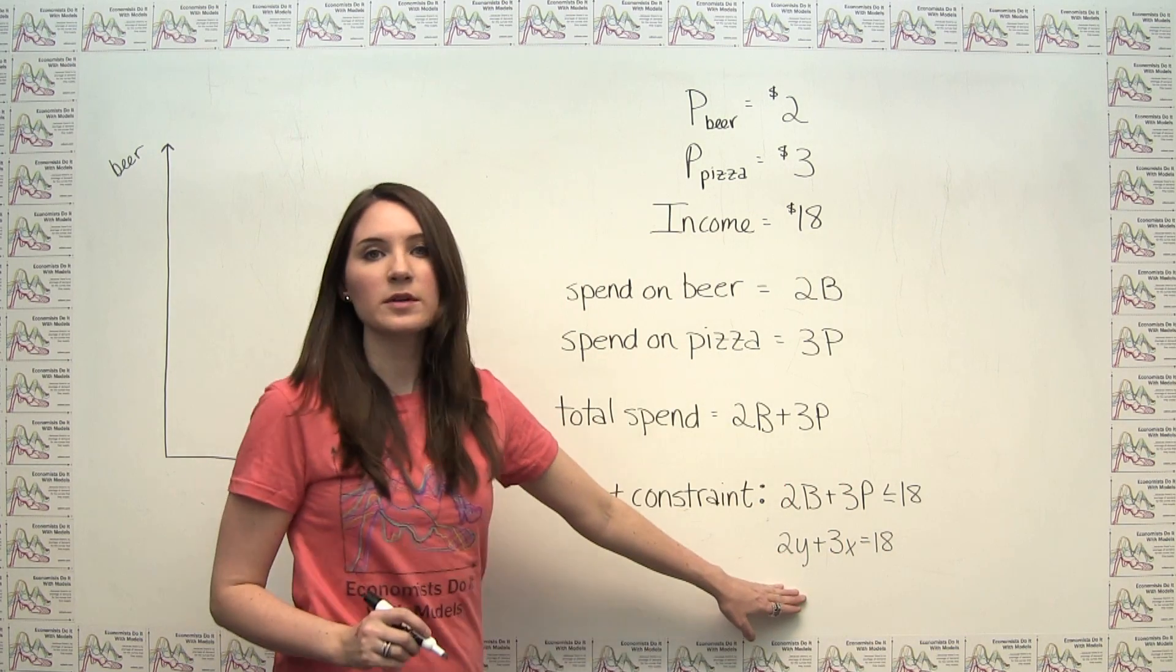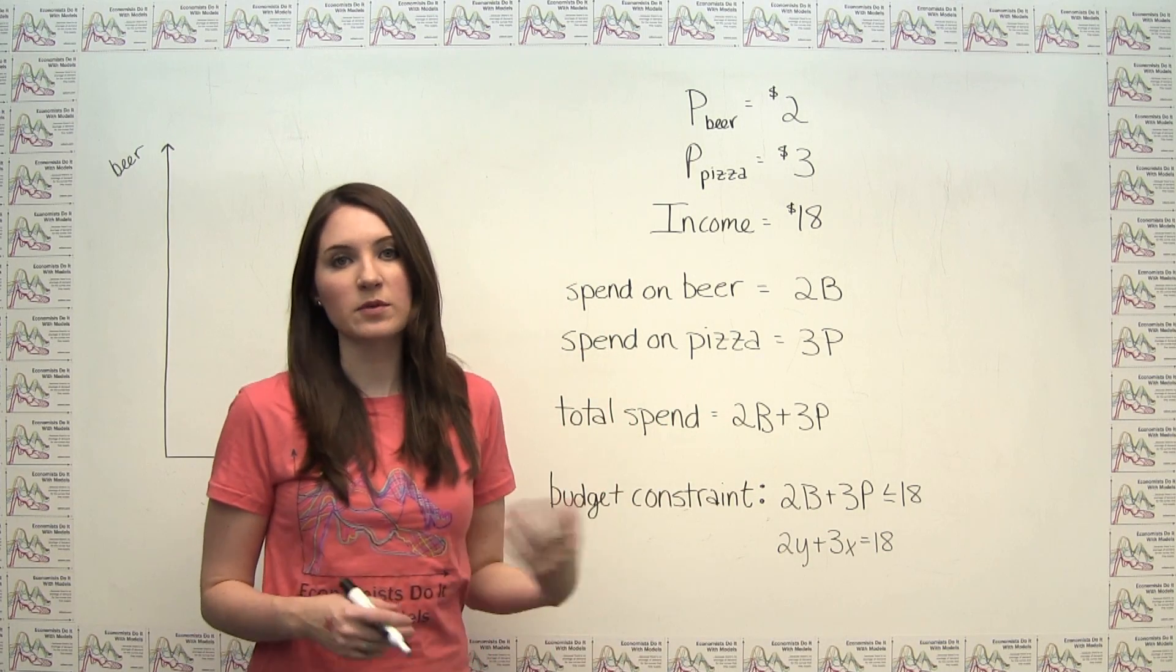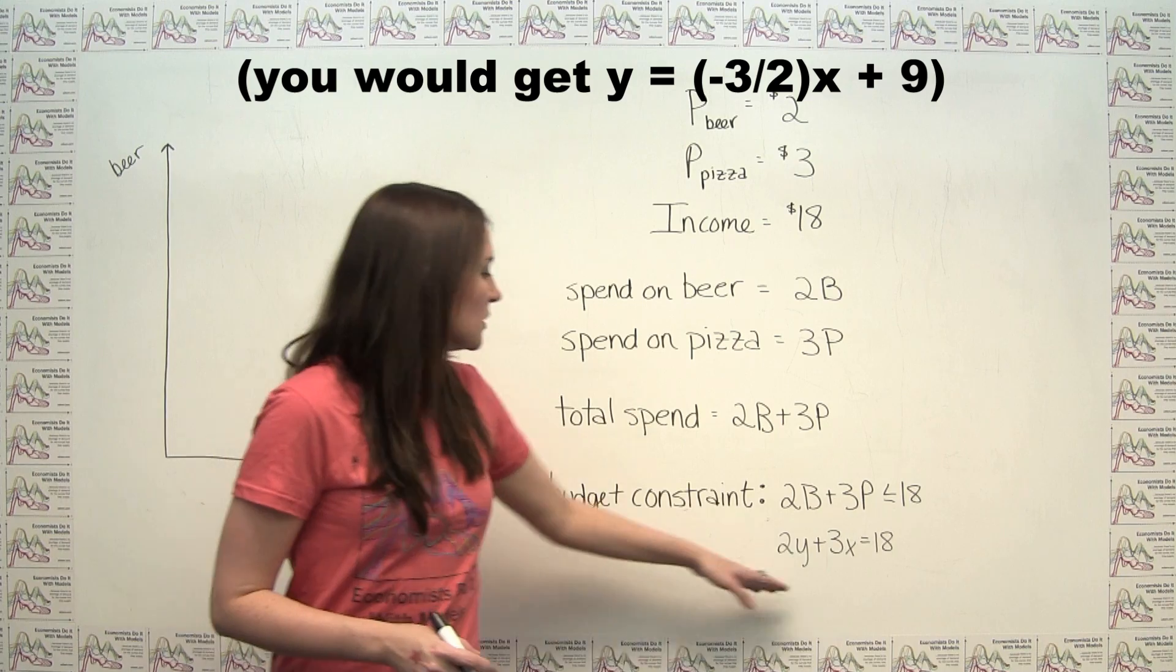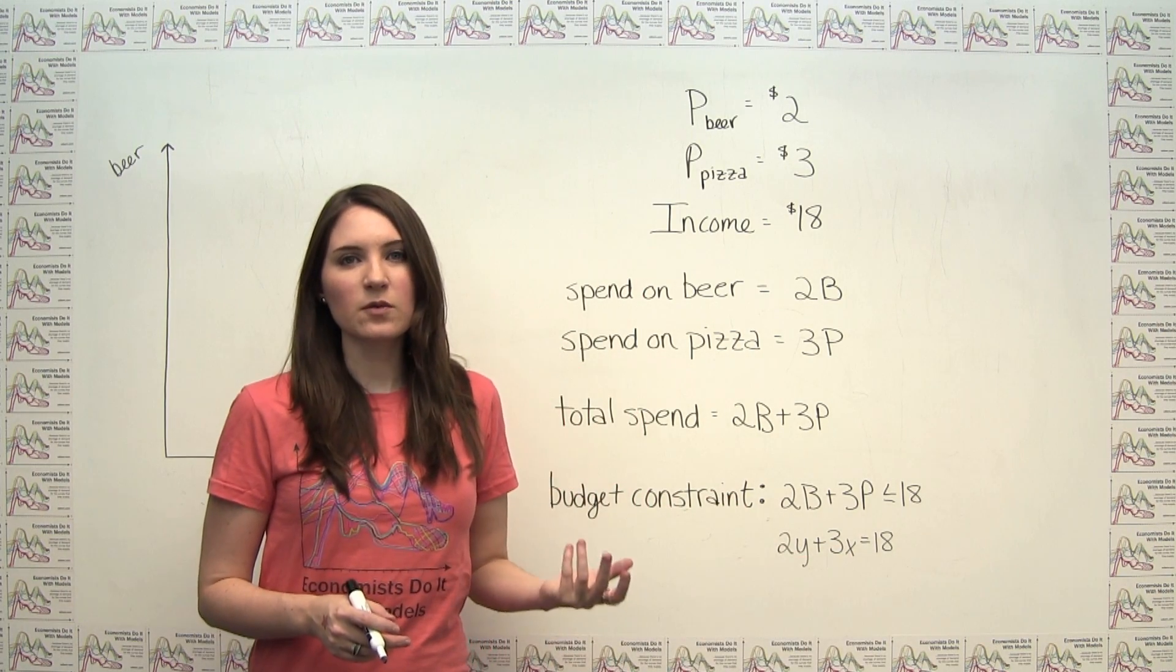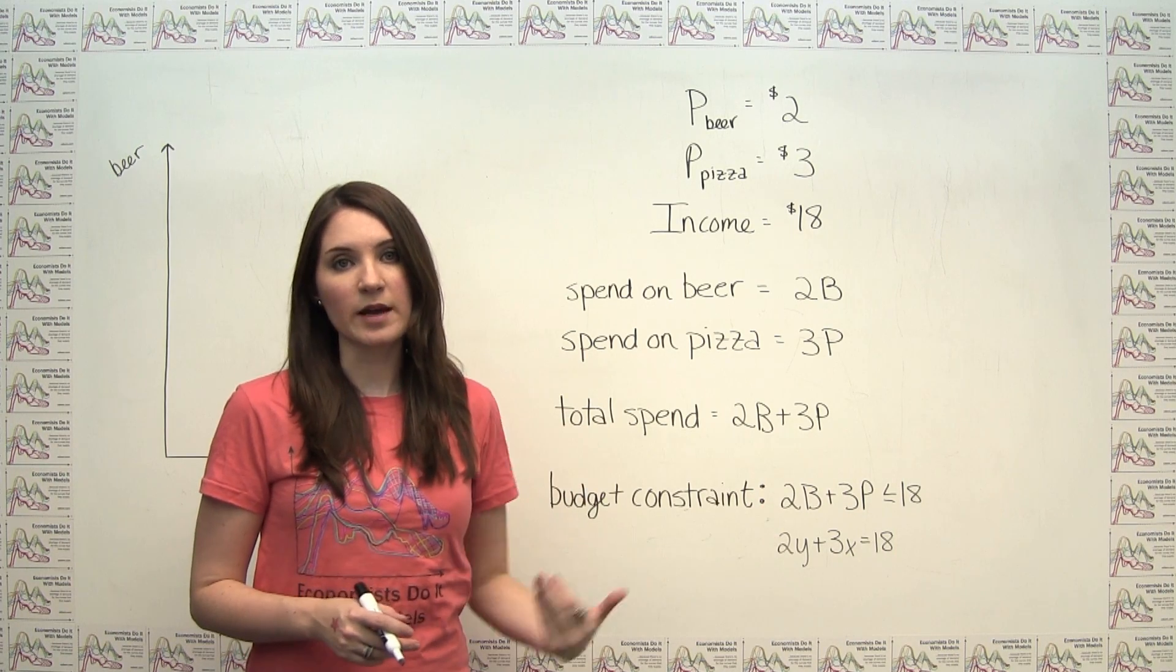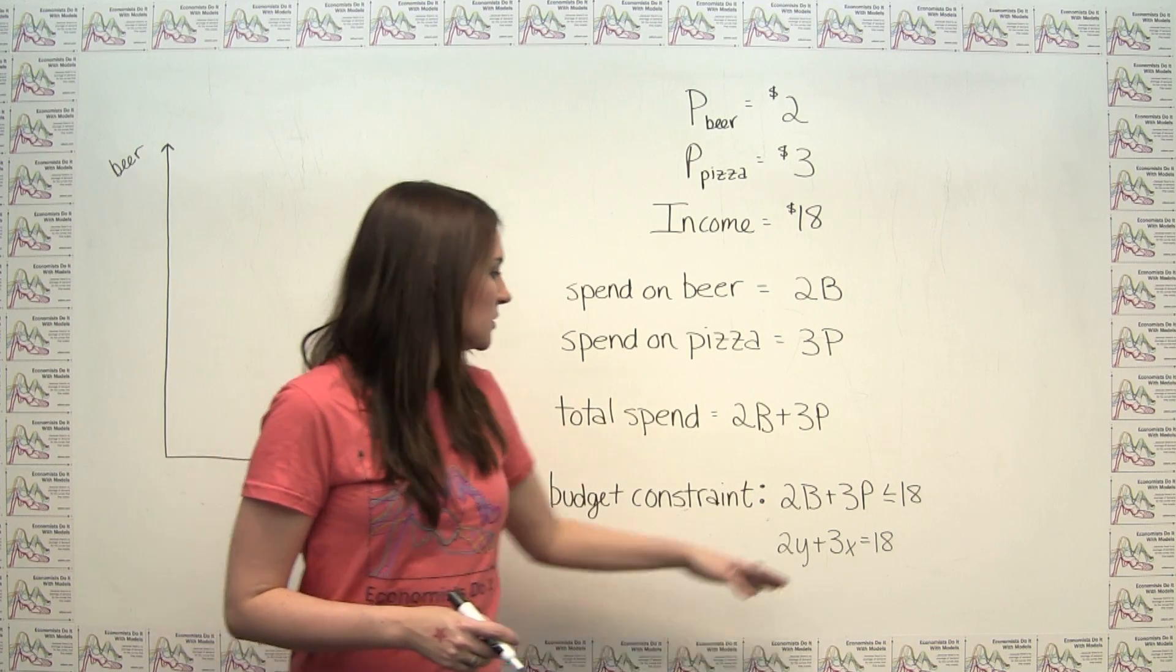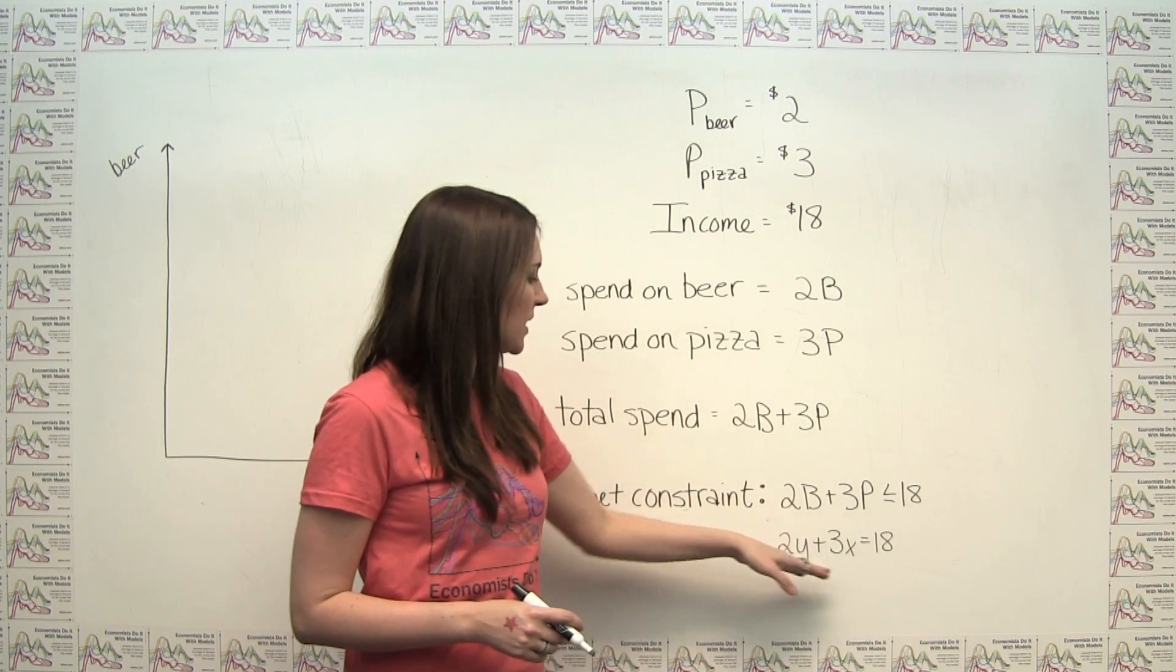So one way we could go about doing this is to just solve for y using the algebra concepts that we learned in high school to figure out what this line has to look like. Alternatively, we could just think about what the end points of the line have to be and then plot the line from there. So, for example, if we were going to take that approach, we could ask ourselves...